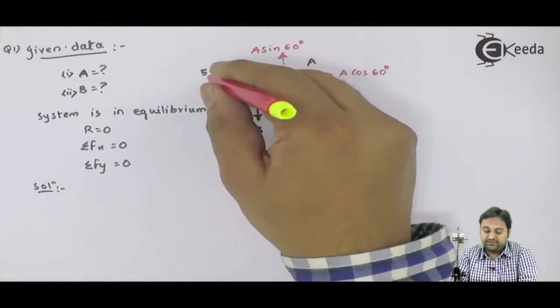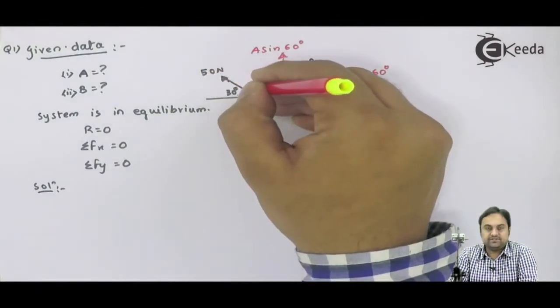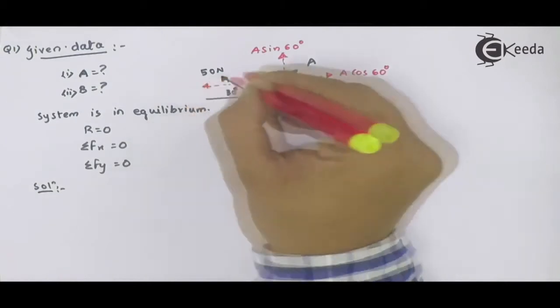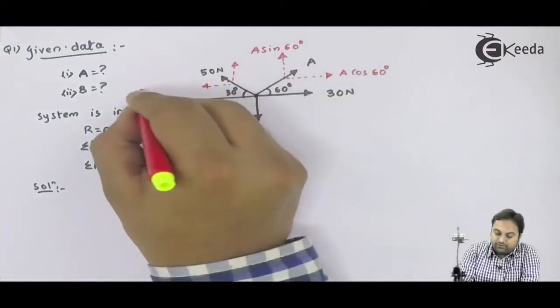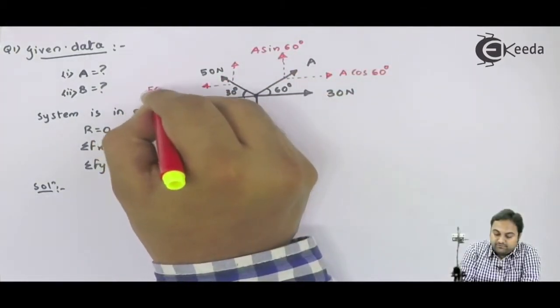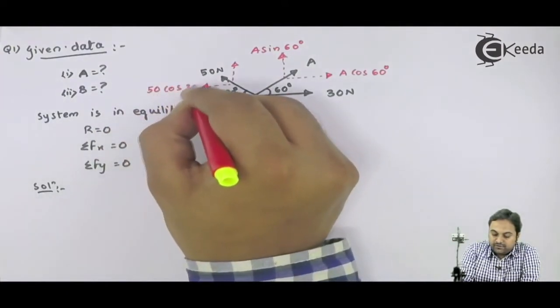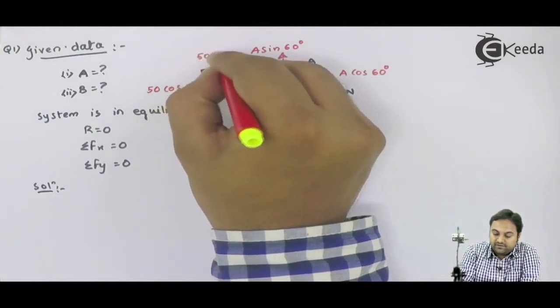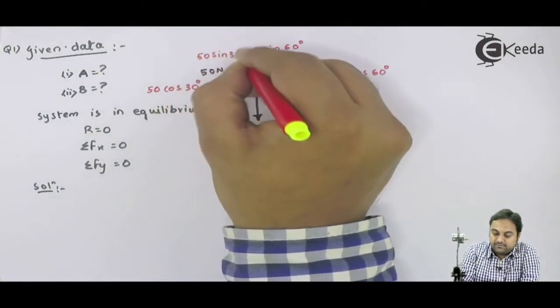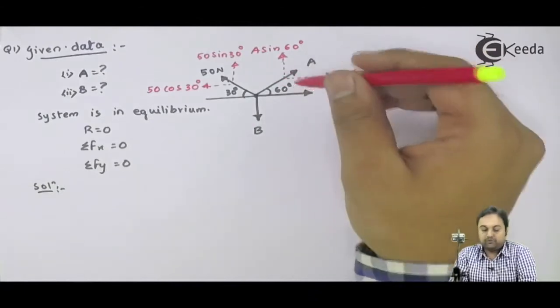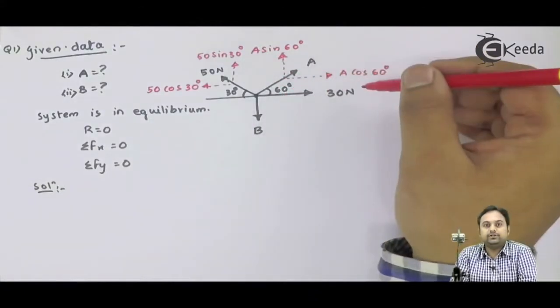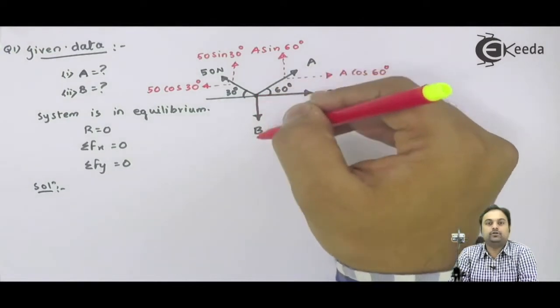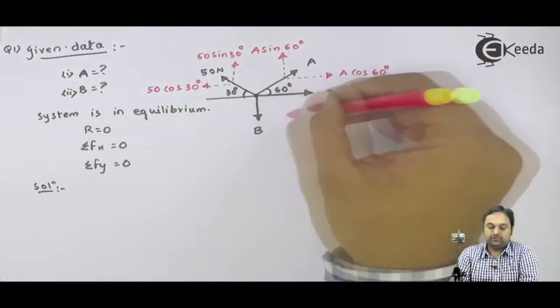Next, 50 Newton is inclined at 30 degree with horizontal. So your horizontal component will be 50 cos 30 degree. Vertical component will be 50 sin 30 degree. Now if we see force 30 Newton, it is a horizontal force and force B is a purely vertical force. So no need to resolve them.